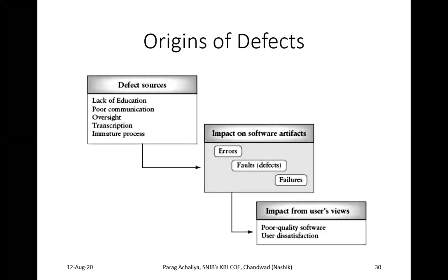The immature process means we are not following the proper procedure of software development. We must follow the Software Development Life Cycle — all phases: requirement gathering, designing, development, testing, and maintenance. If we skip any phase of the SDLC, the software will not function according to the customer's requirement. Not following an already defined process will lead to the generation of error, failure, or defect.